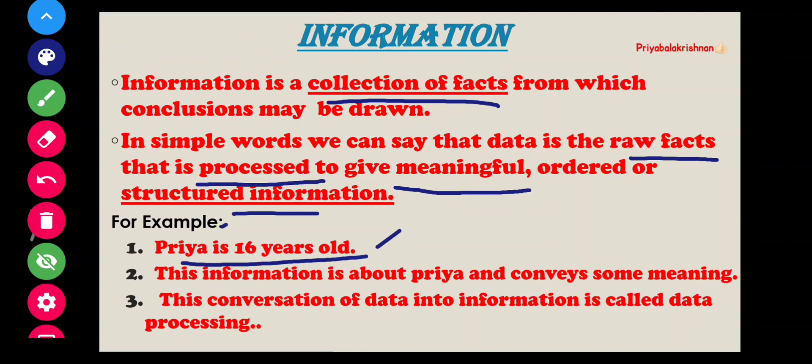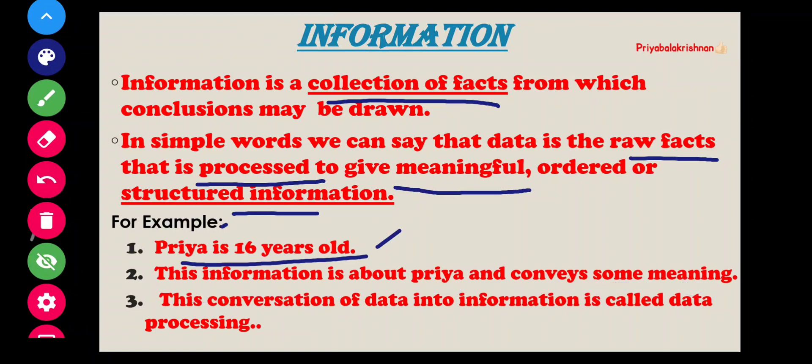For example, the information is about Preya: 'Preya is 16 years old.' Information comes from the data. This information is about Preya and conveys some meaning. Information is about meaningful messages.